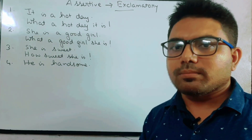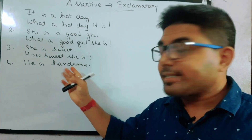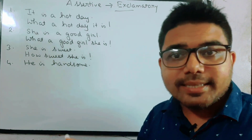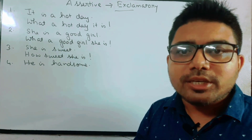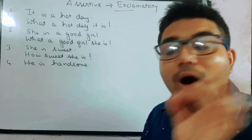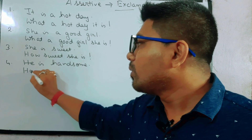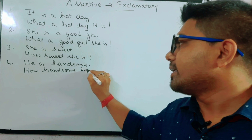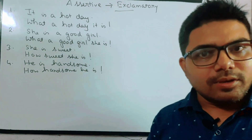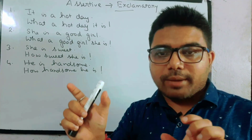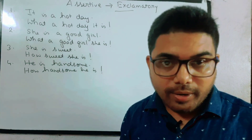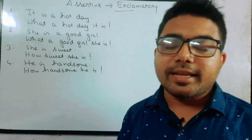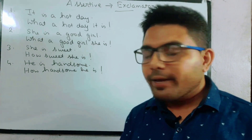'He is handsome.' Kaisa hai? Handsome — again only an adjective, no article. So we start with 'How': 'How handsome he is!' To summarize: agar article ke saath koi describing word diya gaya hai, hum 'What' se start karenge; aur agar normal adjective diya gaya hai, hum 'How' se start karenge.